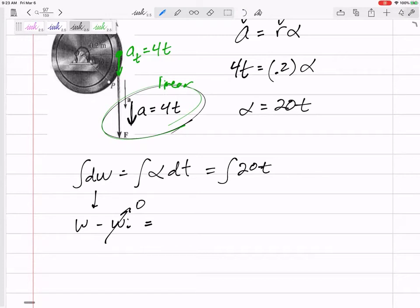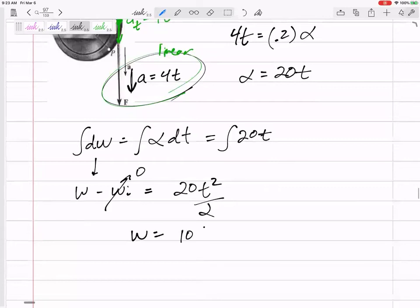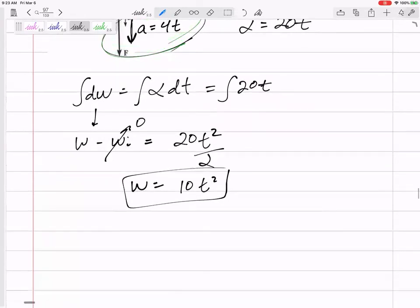The integral of 20t would be t squared over 2. So you've got that 20t squared over 2. So here, my omega would be 10t squared. So there's an equation for angular velocity.